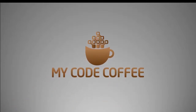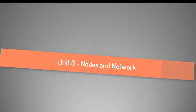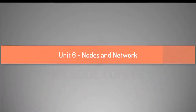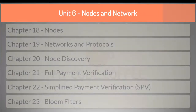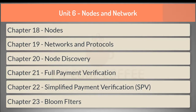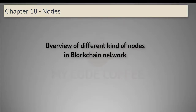Hello and welcome to MyCodeCoffee. We are now starting the next unit dedicated to nodes and networks in blockchain. All the concepts related to nodes, networks, protocols, and verifications will be covered in this unit. This chapter, which is chapter 18 in the series of Bitcoin blockchain, gives you an overview of various types of nodes in a blockchain network.